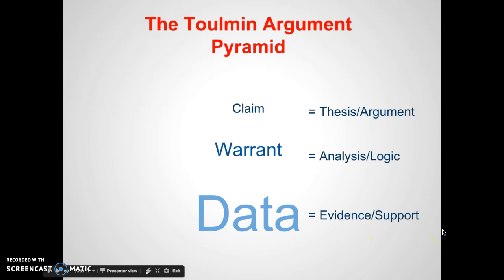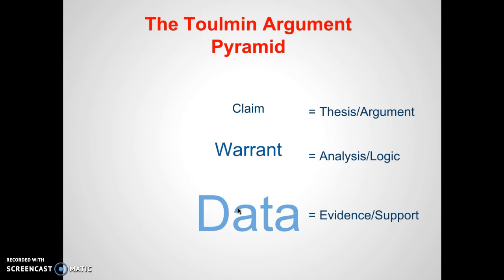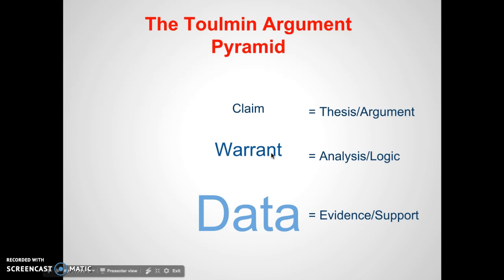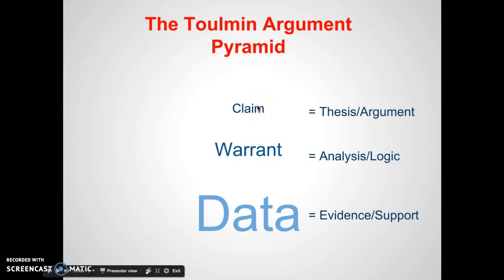The general idea that Toulmin put forth is this: you have a whole lot of evidence, a whole lot of experience — you read a whole lot of pages of Macbeth. And then what you do is you analyze those pages, or analyze that data, and boil it down to a few key steps. And then finally that all reduces into a central argument or claim, and that's why it's in this pyramid format.